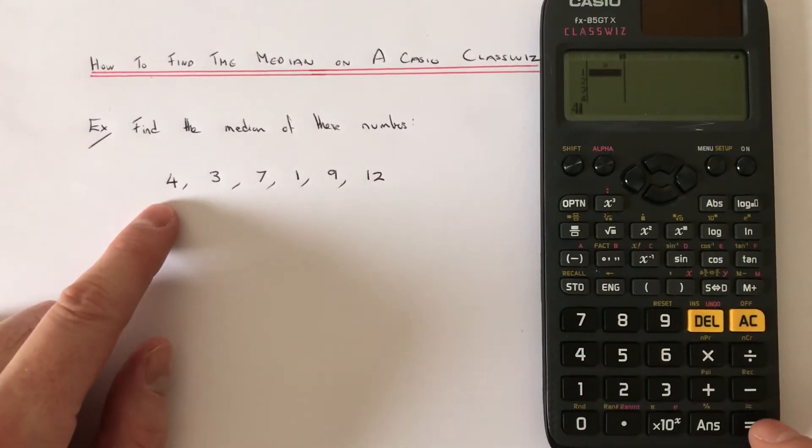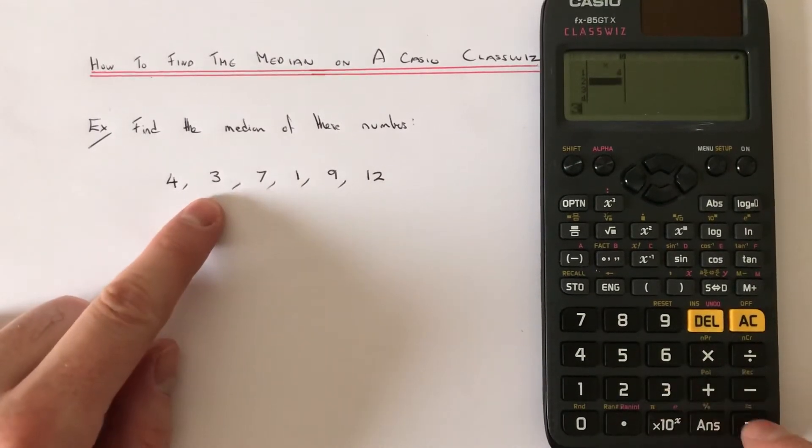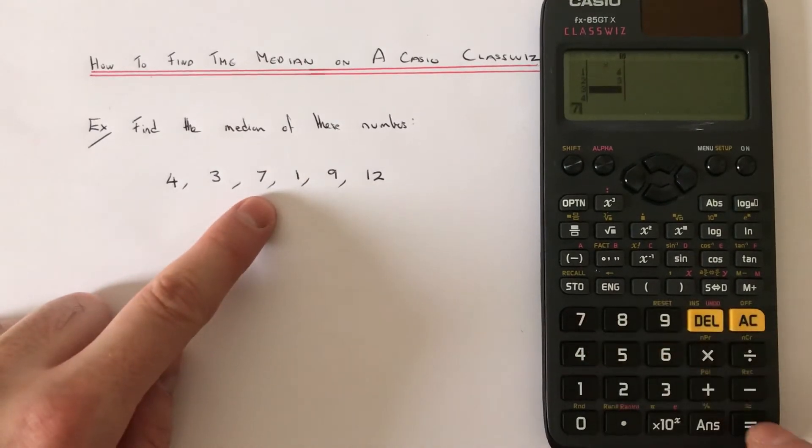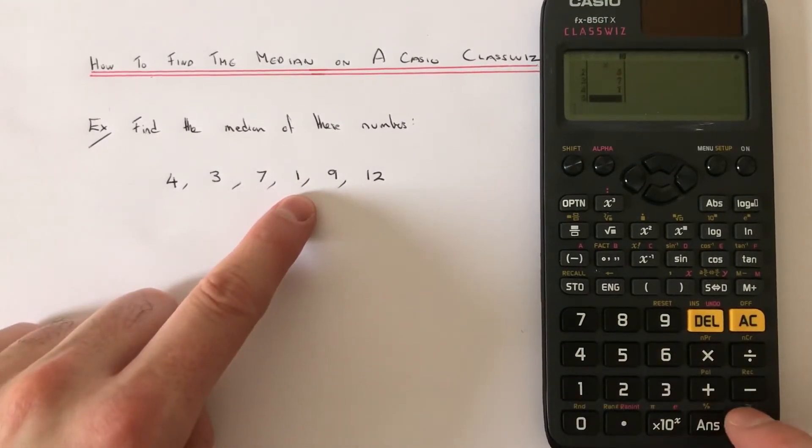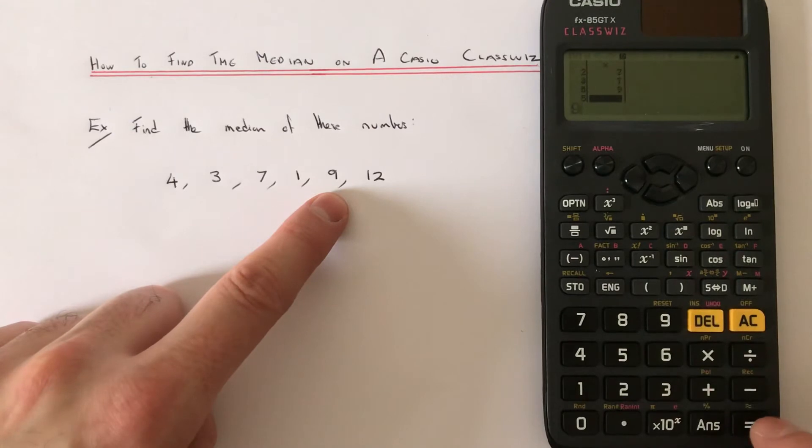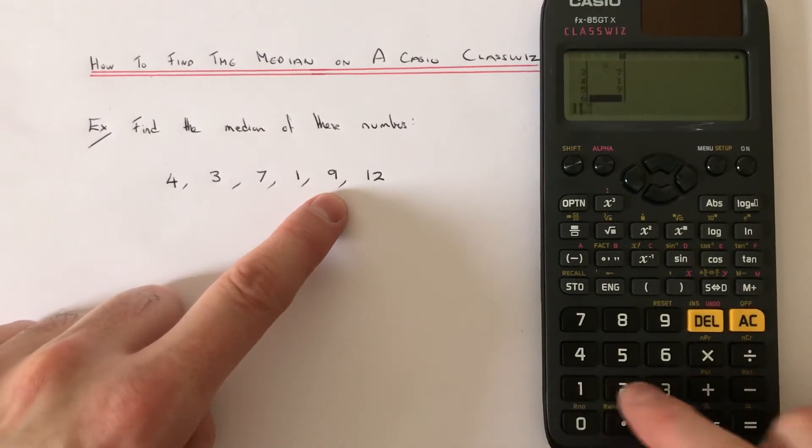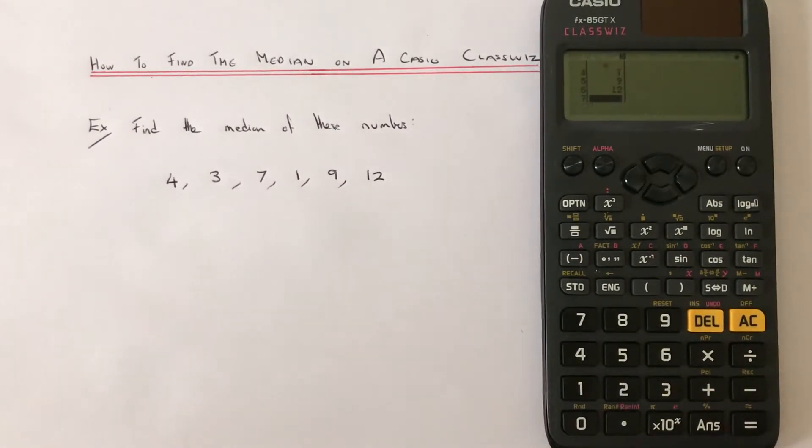Type these in. So 4, hit the equals. 3, equals. 7, equals. 1, equals. 9, equals. 12, equals. Okay.